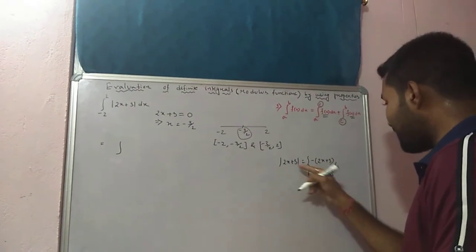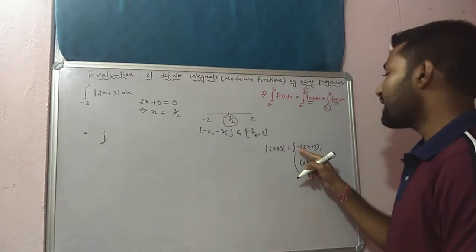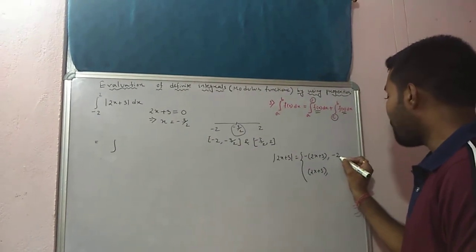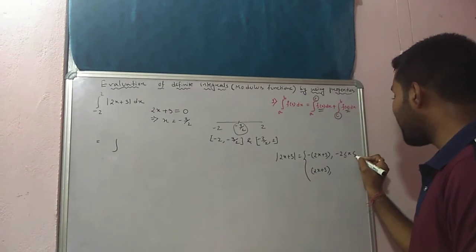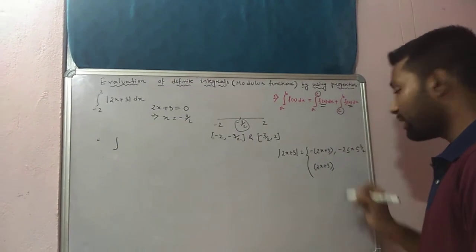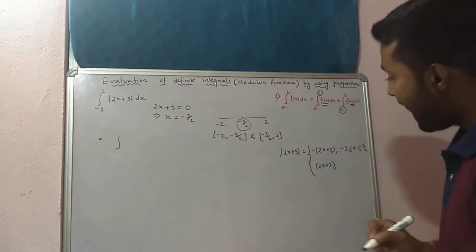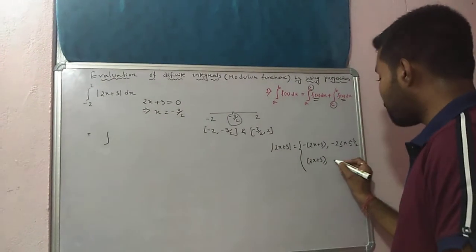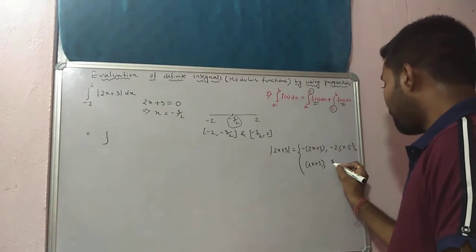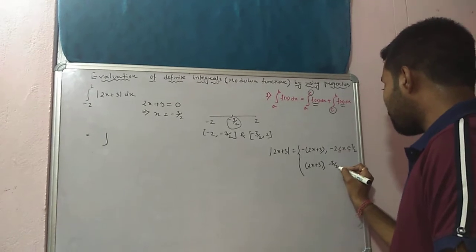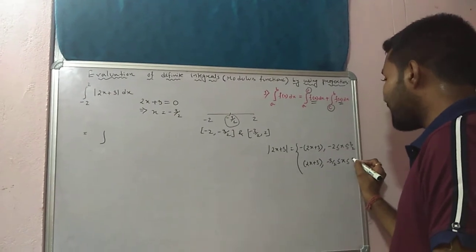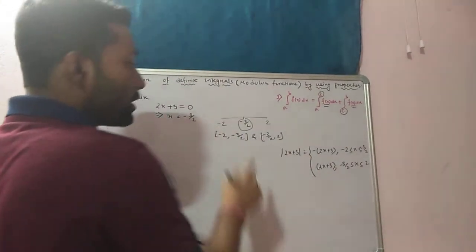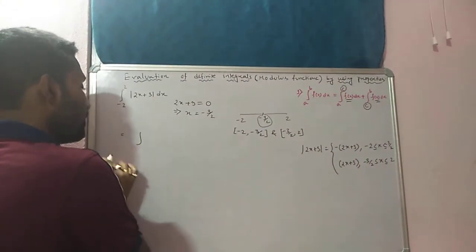In between minus 2 and minus 3 by 2, if you take any value, (2x + 3) will always be negative. So modulus of (2x + 3) equals minus (2x + 3) when minus 2 ≤ x ≤ minus 3 by 2, and modulus of (2x + 3) equals plus (2x + 3) when minus 3 by 2 ≤ x ≤ 2. It is now confirmed which part is negative and which part is positive.